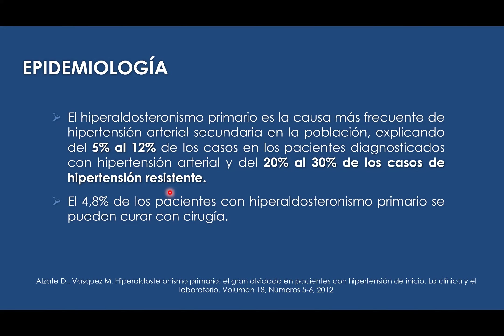Algo importante a considerar es que los pacientes diagnosticados con hipertensión arterial resistente — aquellos que presentan un tratamiento con dos antihipertensivos a dosis máxima más un diurético también a dosis máxima, catalogado como hipertensión resistente — el 20 al 30% de estos pacientes pueden padecer de hiperaldosteronismo primario. Es una causa importante a considerar.